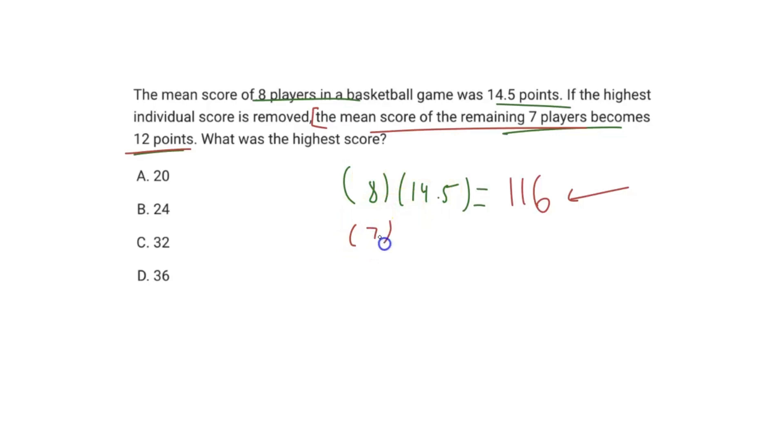We're going to take the seven players - we had eight players before, but now the mean goes down. So the mean for the seven players is 12 points, which makes sense because if you remove the guy that scored the most points, it's going to bring the mean down. So 7 times 12 gives us a value of 84.